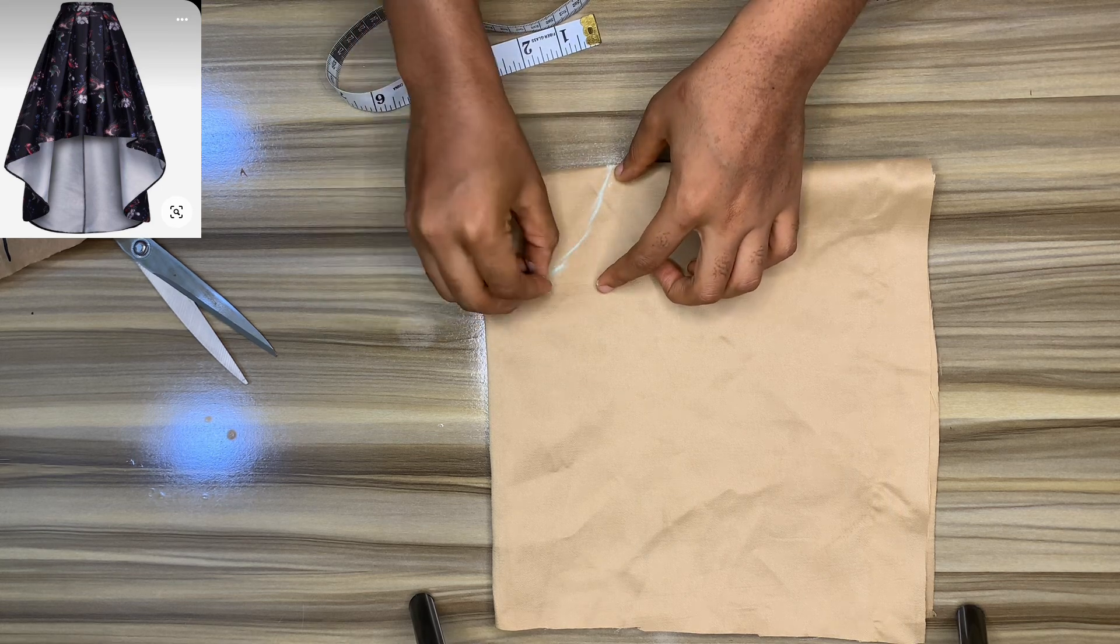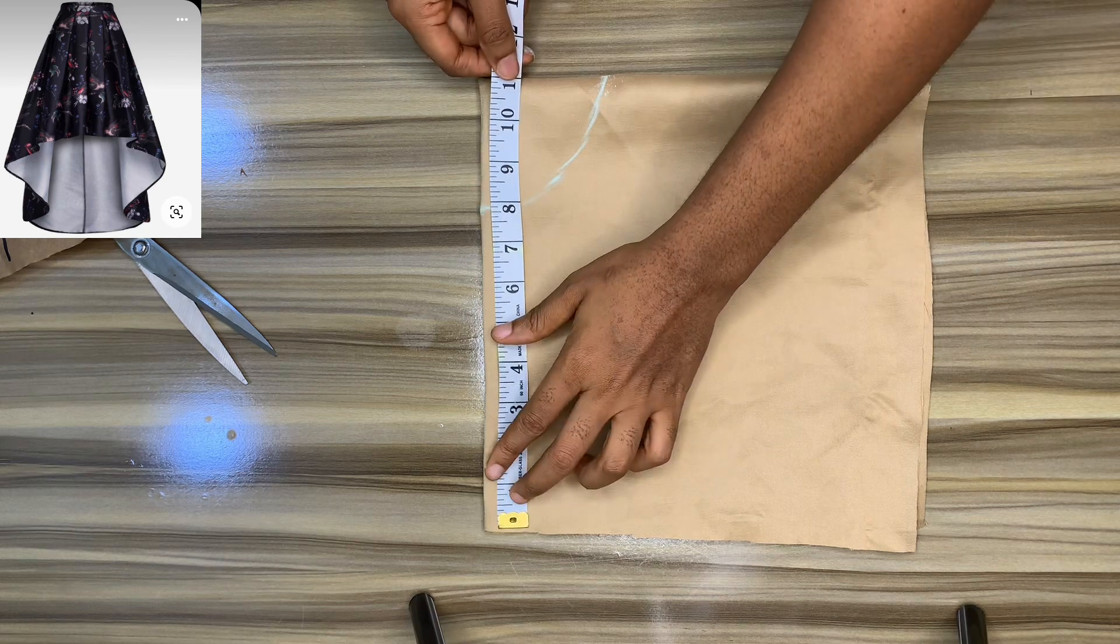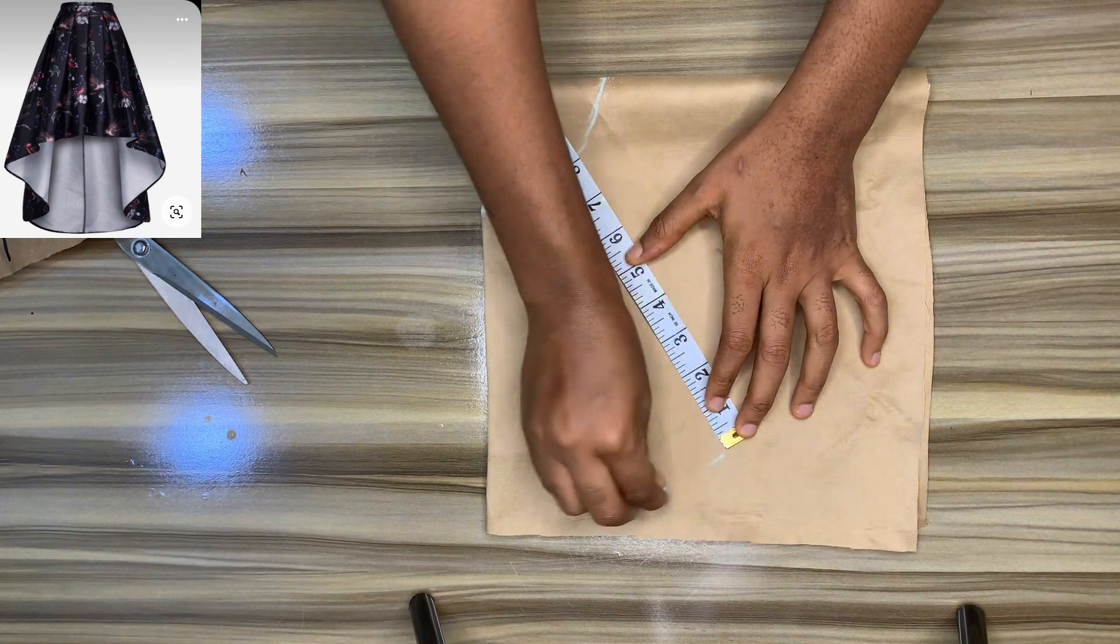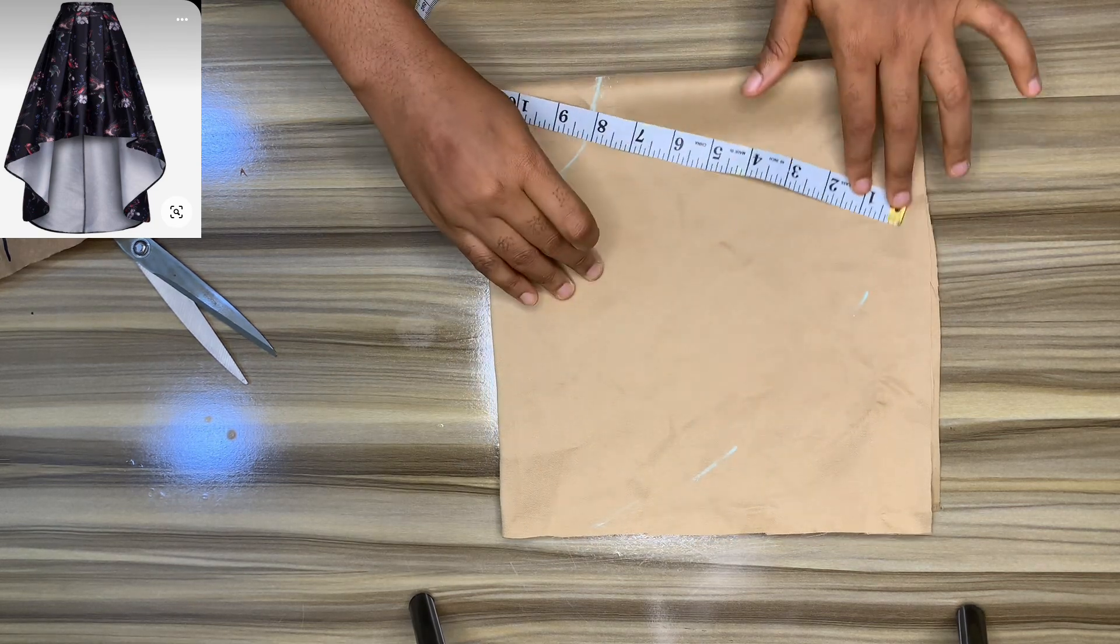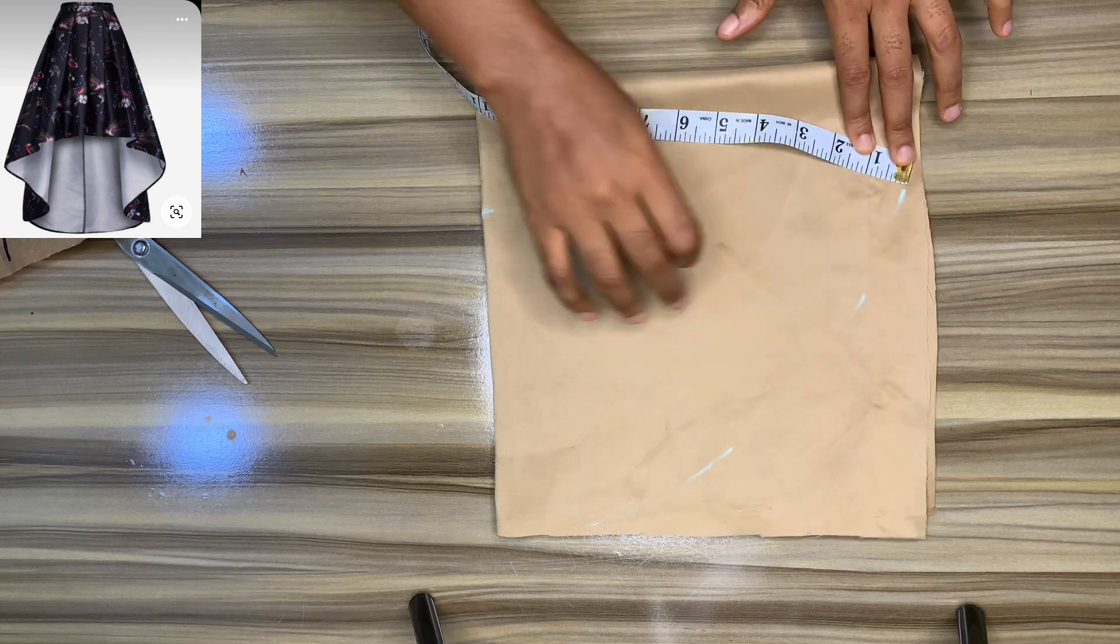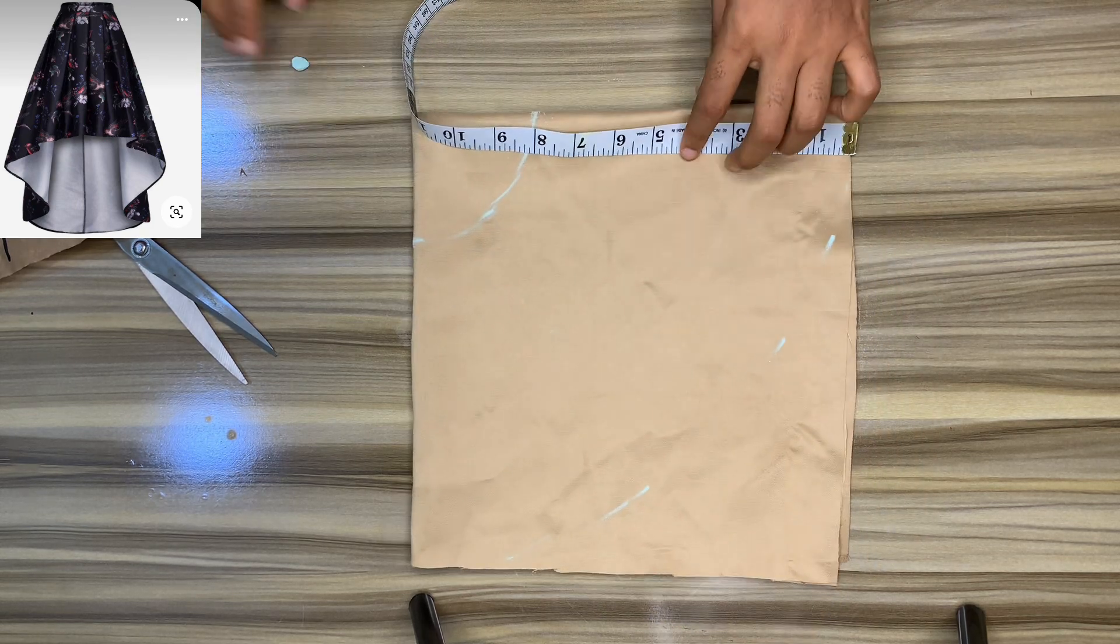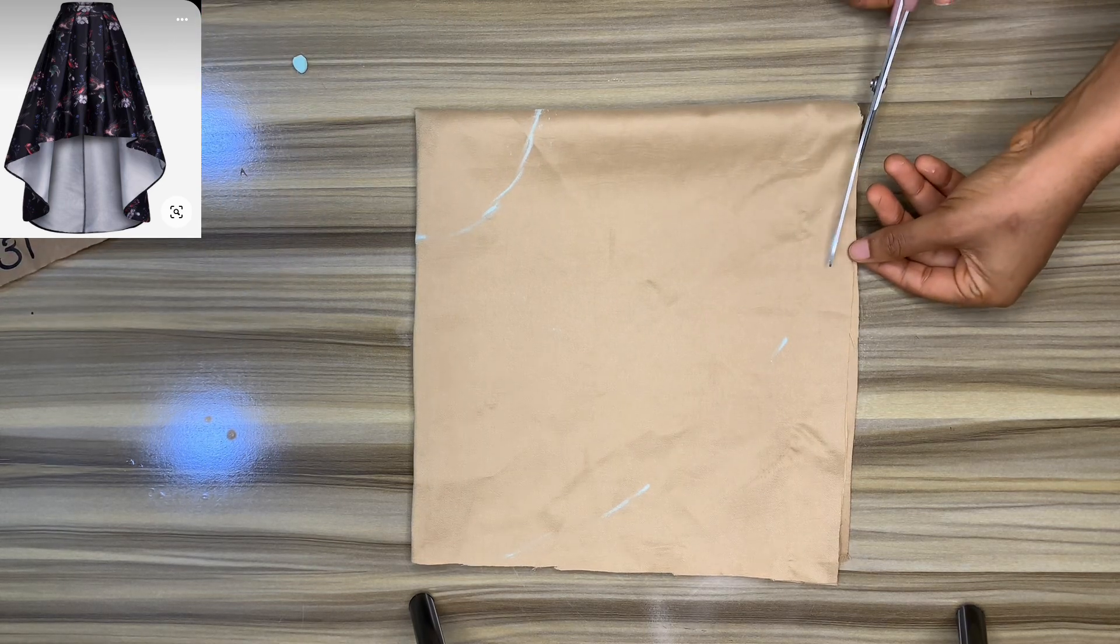Now this high-low skirt is a peplum skirt, so we're cutting it in form of a peplum first. The length of the skirt we're going to be using is eight inches. Mind you, the length of the skirt you use is the longer part. That's what you use to first cut out your peplum. When you're done marking your eight inches on all sides, you cut it out. This is the full length of the longer part of your skirt.